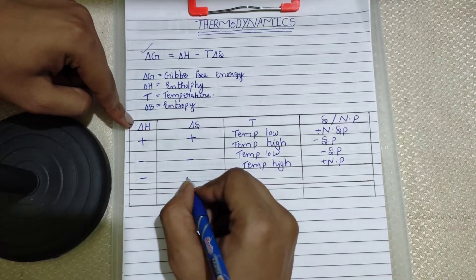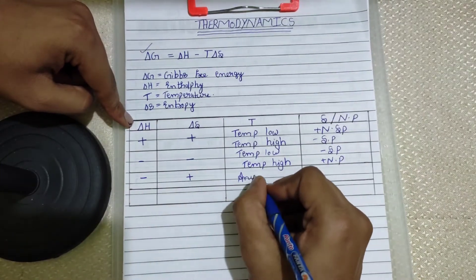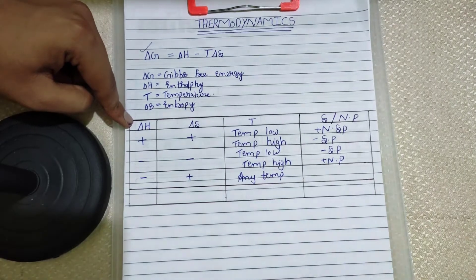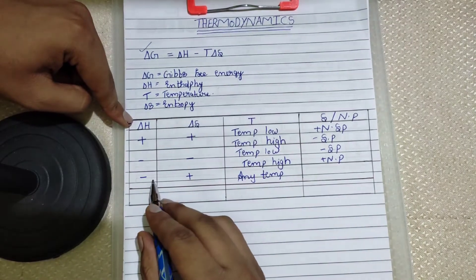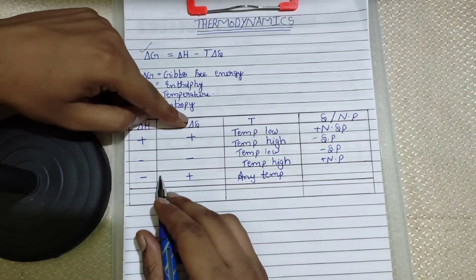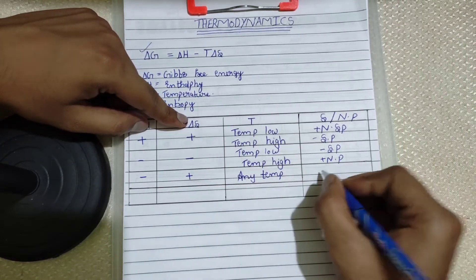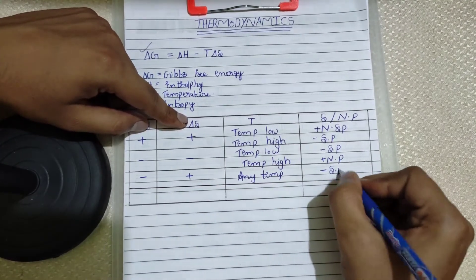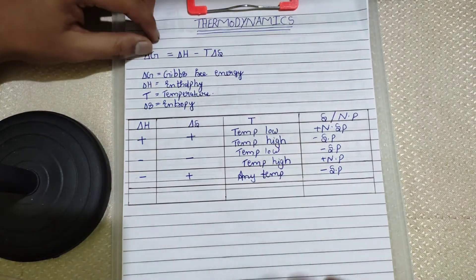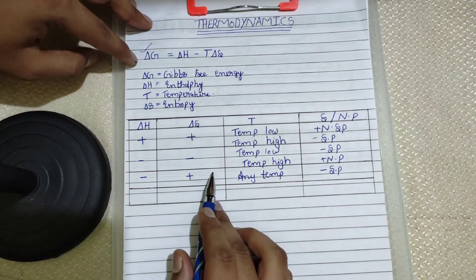Now the third case: ΔH is negative and ΔS is positive. At any temperature, whenever you come across this combination, the reaction will be spontaneous — because a negative ΔH and a positive ΔS always make ΔG negative regardless of temperature.